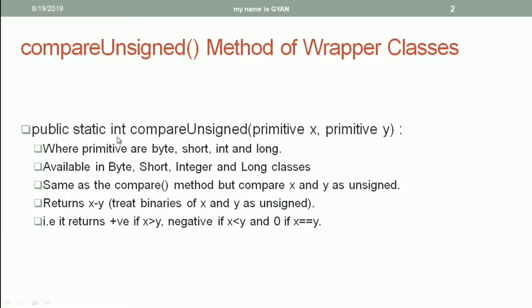It returns a primitive integer in all the classes. The compareUnsigned method accepts two arguments as primitives. In the class Byte, these primitives are the primitive byte. In the class Short, these primitives are the primitive short. In the class Integer, these primitives are of type int and in the class Long, these primitives are of type long.